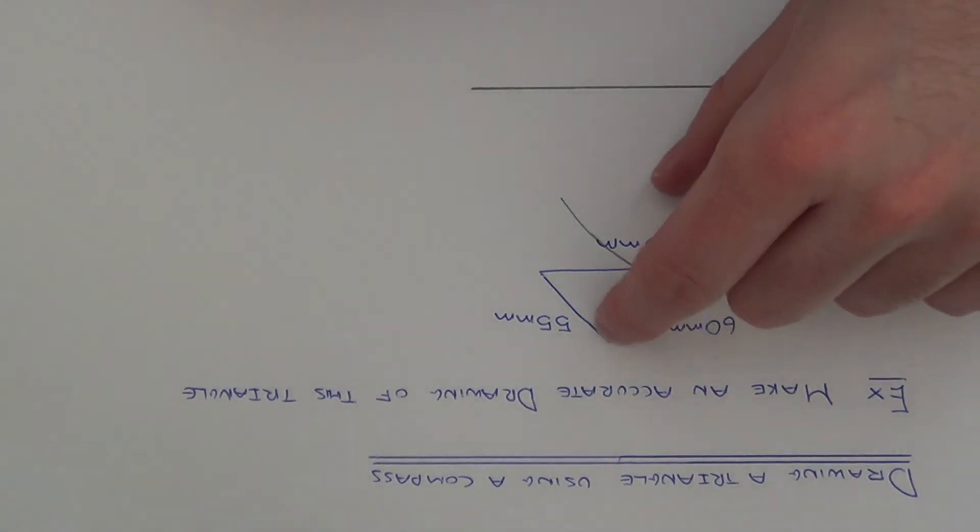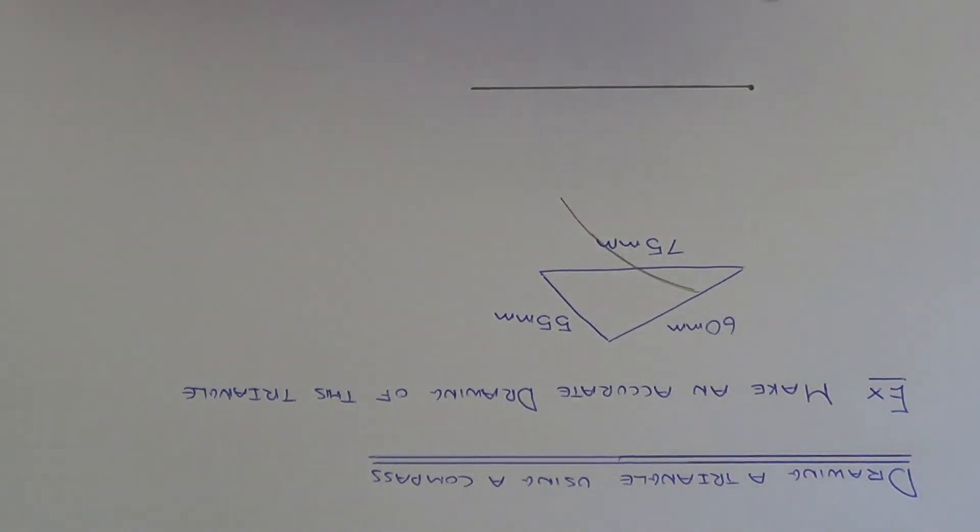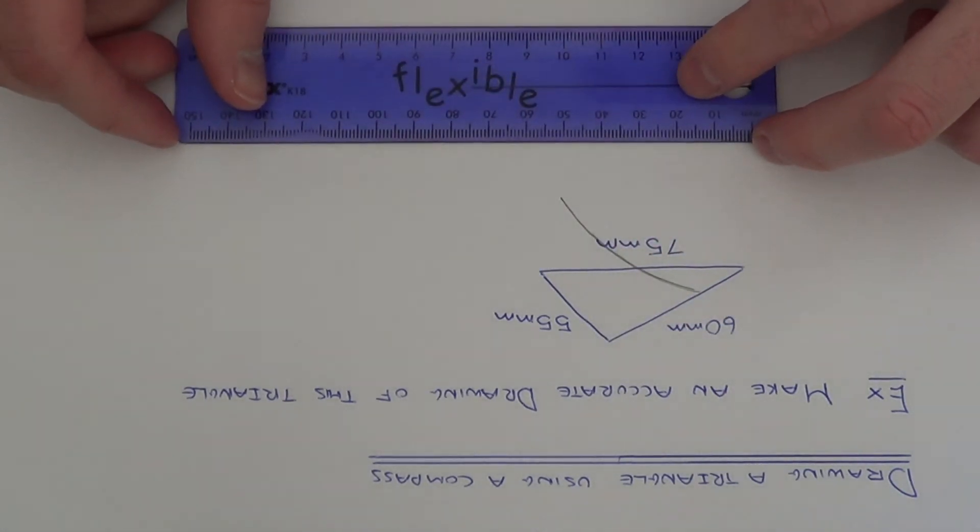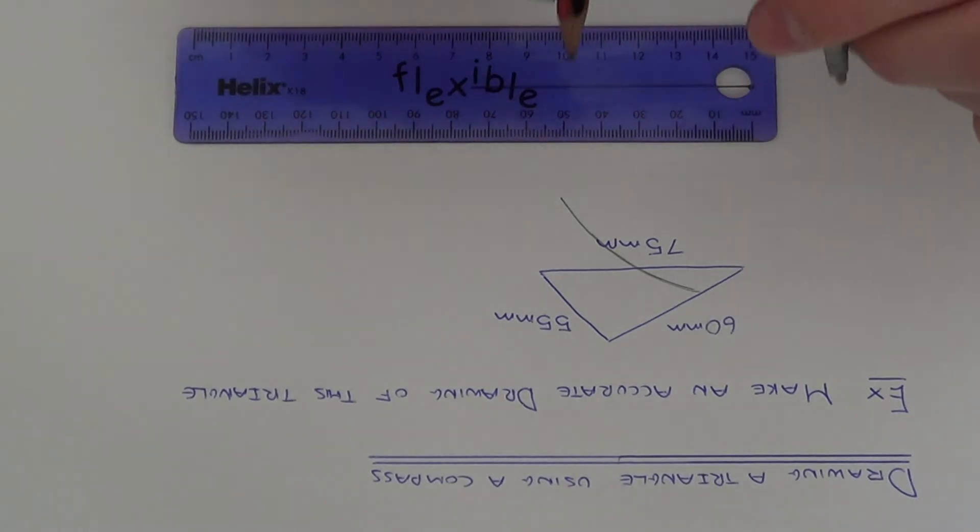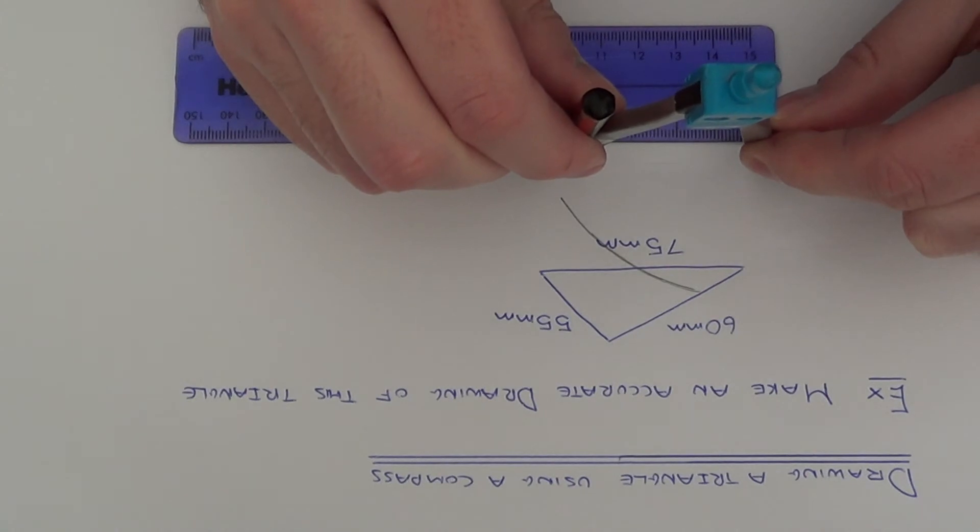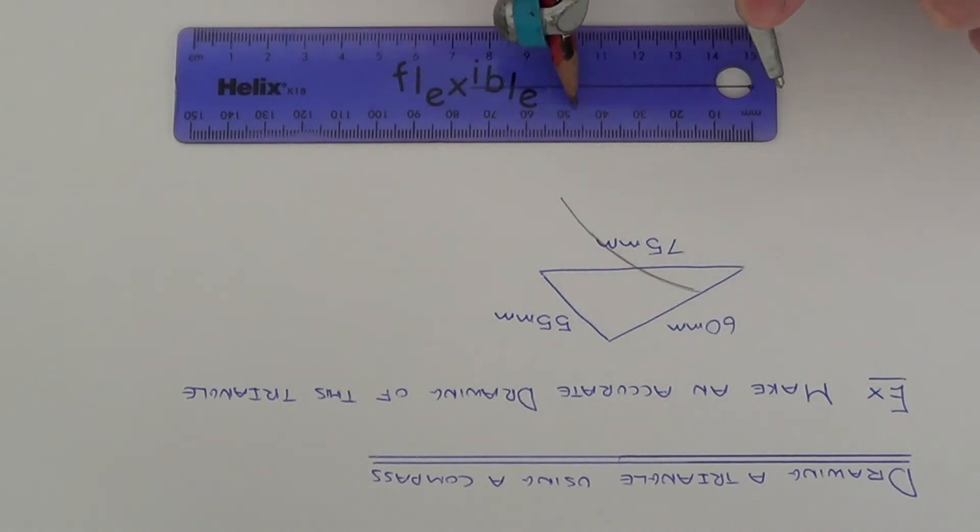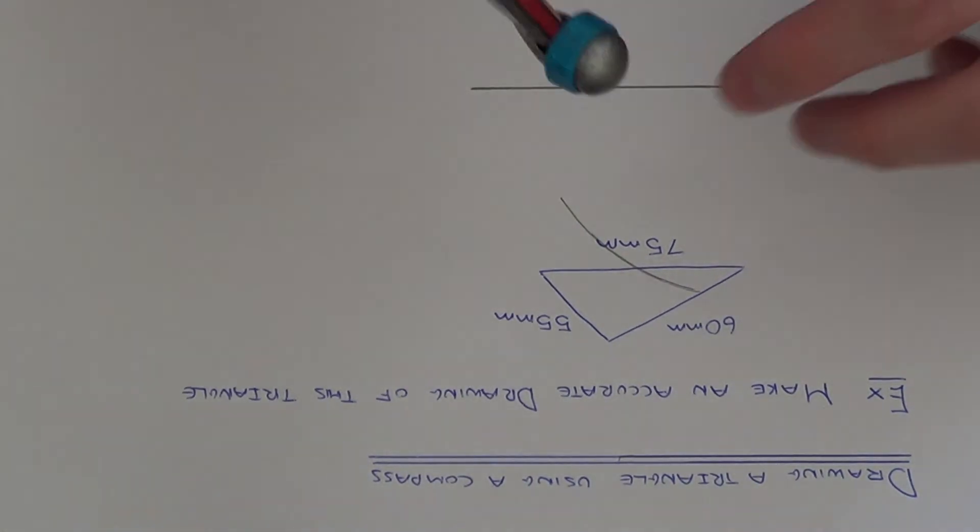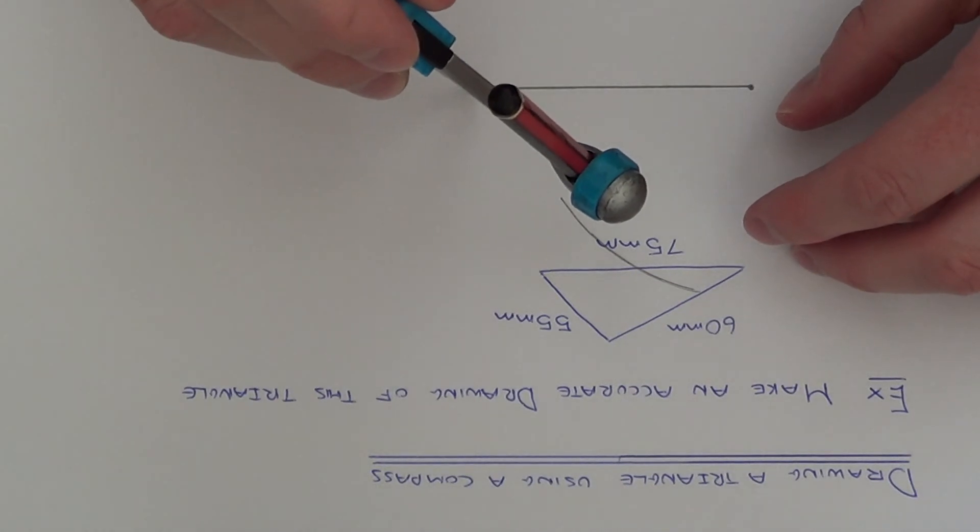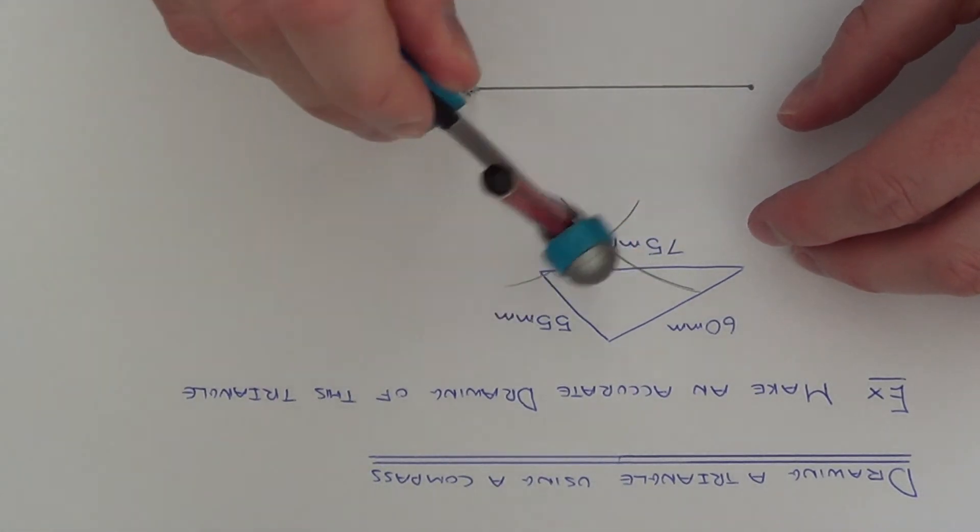Now the third edge is 55mm. So again, if you get your ruler and open your compass to 55mm. As you can see it's 55mm. So from the right hand side of the line, draw another arc.